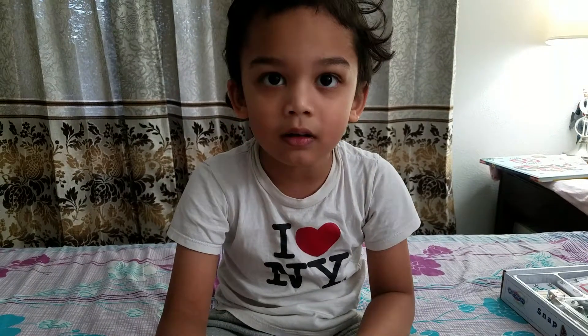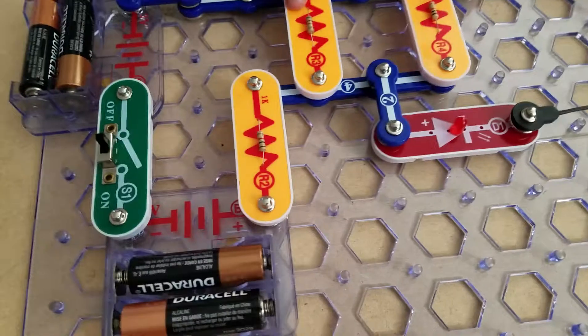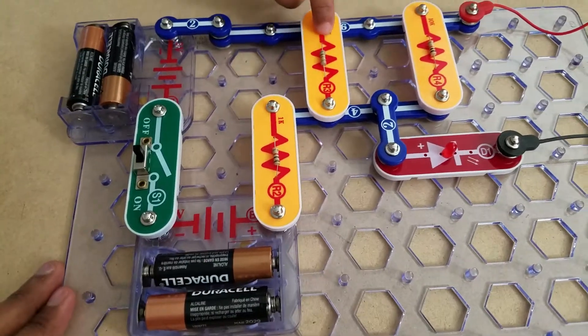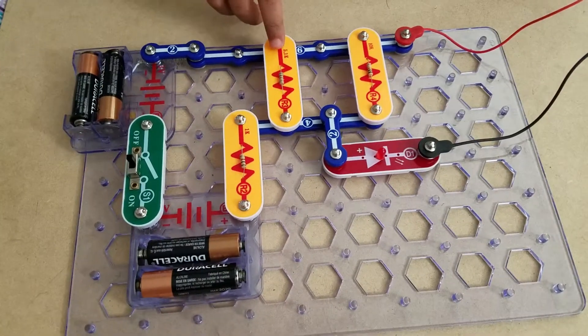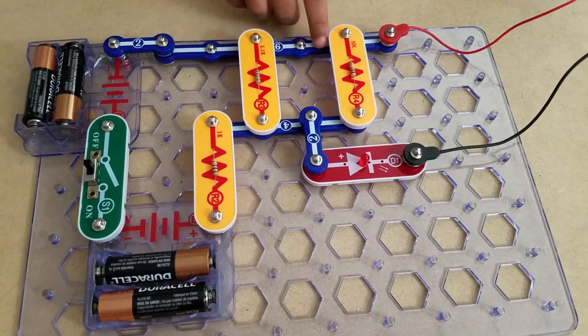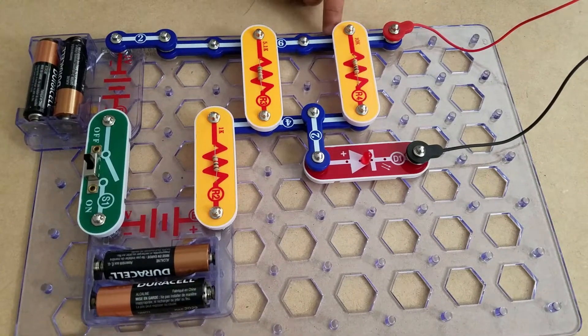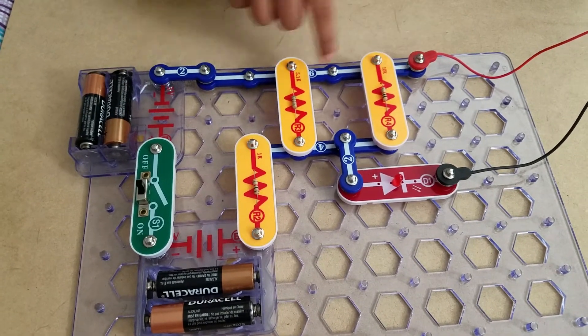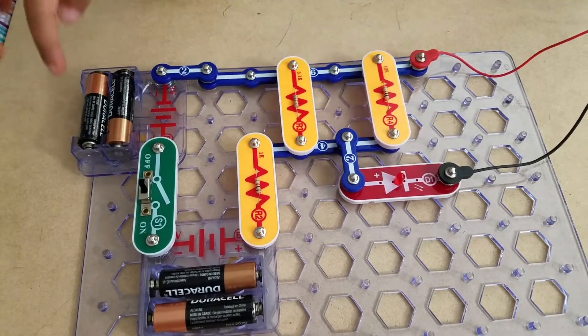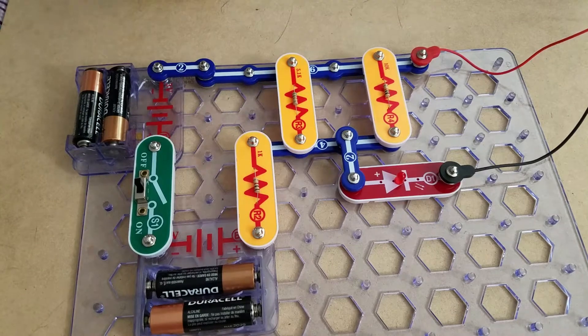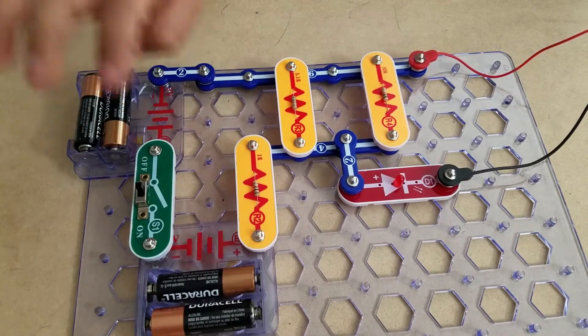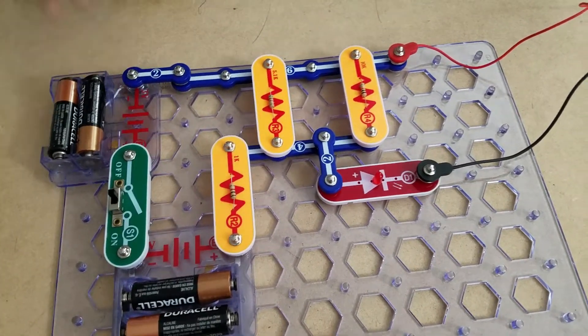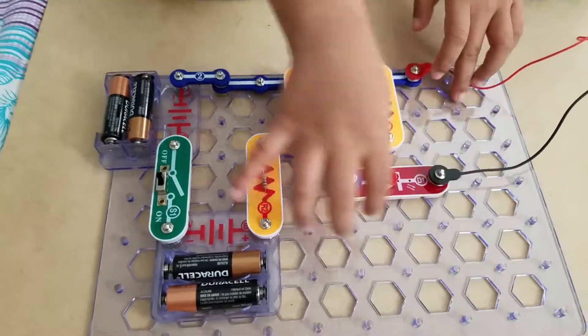This project is a water detector. For this, Ishawn used snap wire, diodes, an on and off switch, battery holders, batteries, and a circuit board.